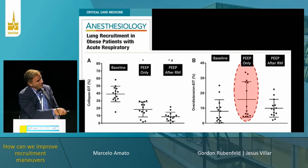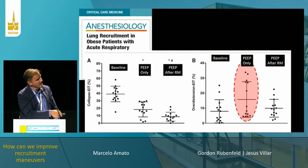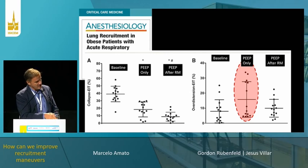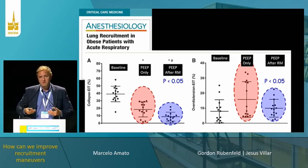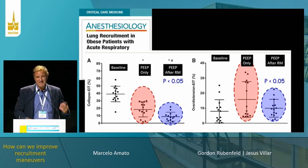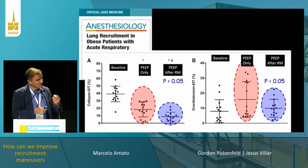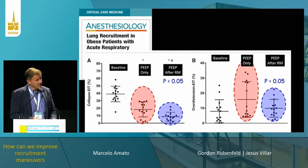There was an interesting result: looking at overdistension and collapse at baseline, at the set PIP, and after the recruiting maneuver — we reduced the amount of collapse, but also reduced overdistension. The driving pressure dropped by almost 10 centimeters of water. This was very reinforcing and a very promising result.